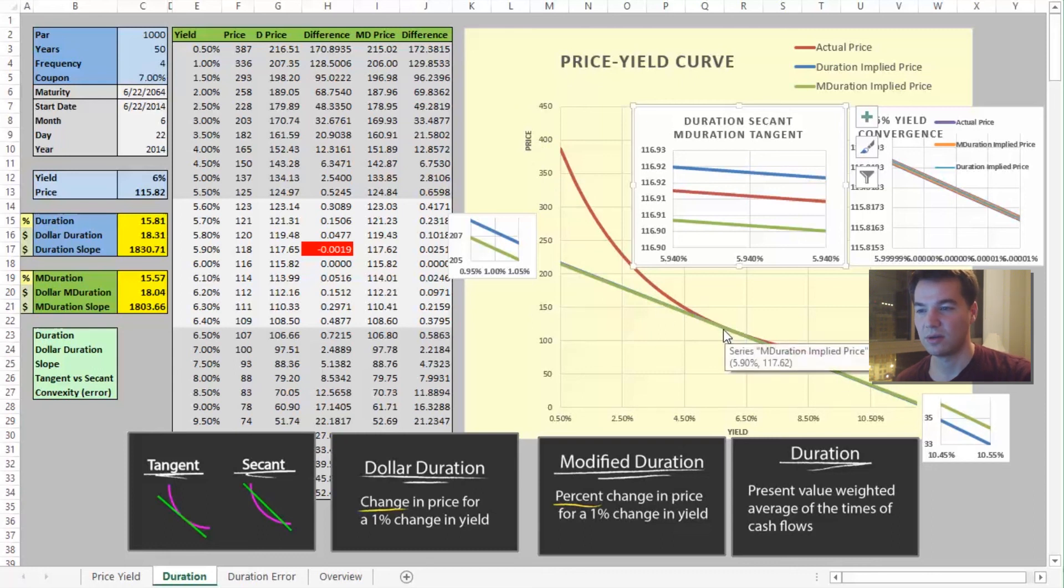You can see as our calculation for a, as our number for a yield change increases, our predicted price, based on duration, is increasingly inaccurate the farther away we get. And that's duration error, which is caused by the convexity of the price-yield curve, and we will get into that in part two.